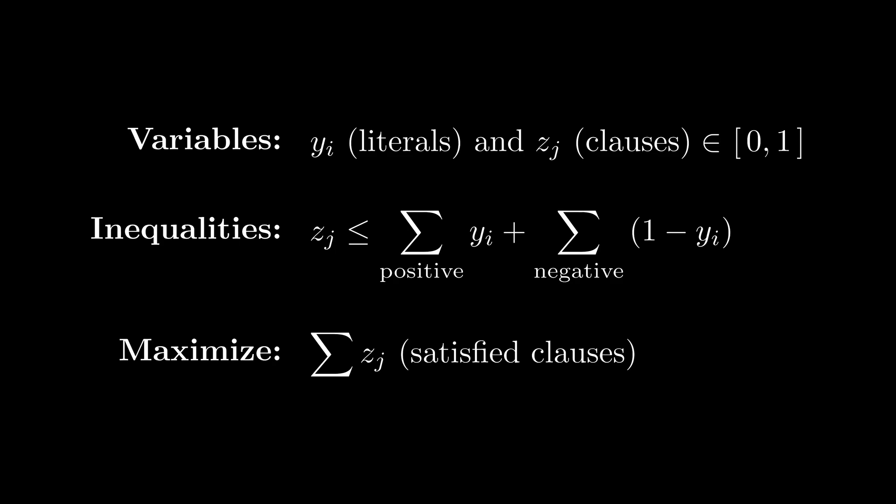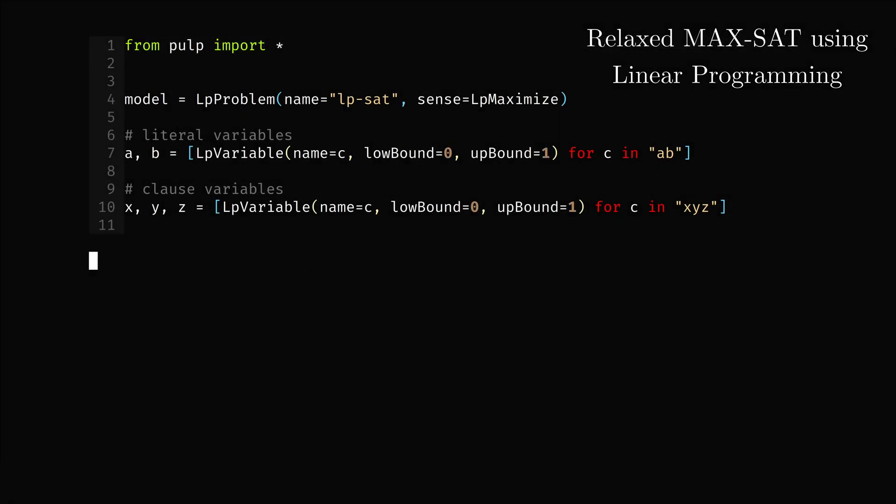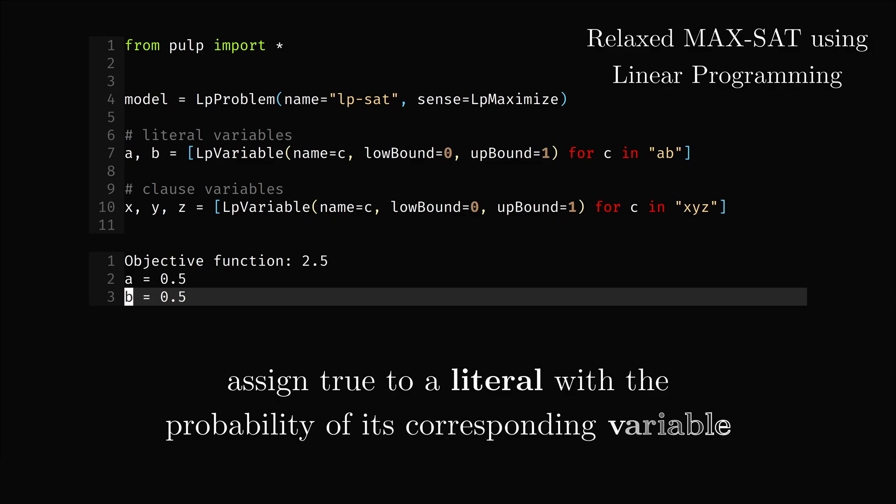We can demonstrate this on the following expression, producing this relaxed linear program. The optimum is 2.5, with a and b both set to 0.5. Now we obviously can't satisfy 2.5 clauses, but what we can do is use a and b to help us assign true and false values to the corresponding literals. Since the variable a is 0.5, we'll assign the literal a true with this probability, and false otherwise, and the same for b.